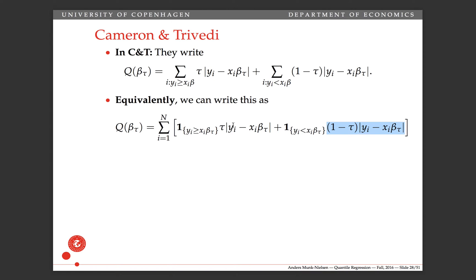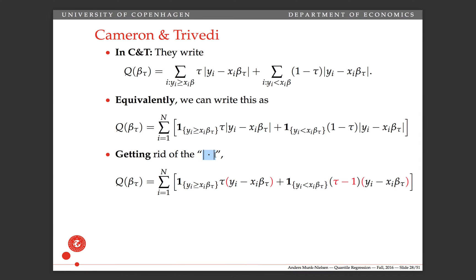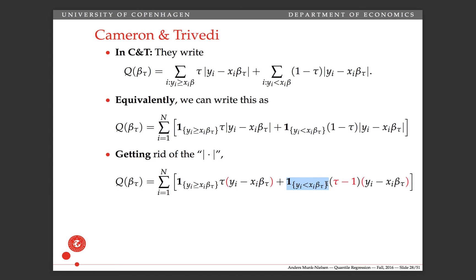When the residual is positive, it's tau times the residual, and when it's negative, it's 1 minus tau times minus the residual, or the absolute value of the residual. To move towards the specification used in the slides and in the literature, we need to get rid of the absolute values. In the first part, we're already multiplying by something that's zero if the term inside is negative, so we just remove the absolute value. In the second part, the term inside is always going to be negative, so taking the absolute value makes it positive, meaning we have to multiply by minus 1.